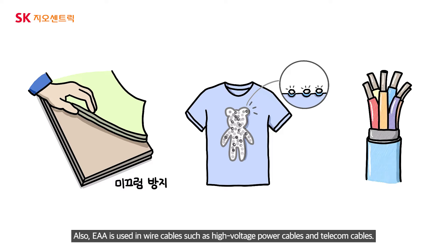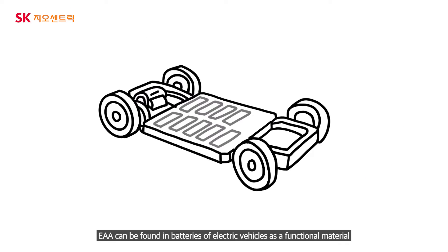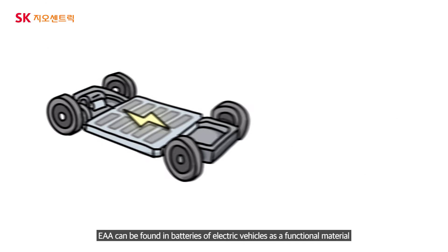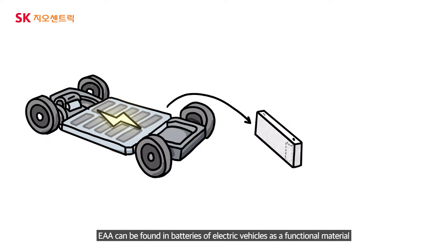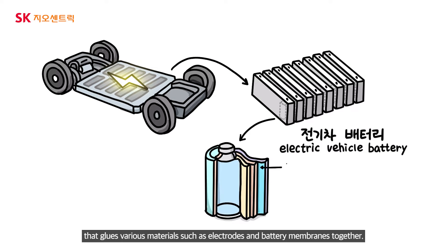EAA is used in wire cables such as high-voltage power cables and telecom cables. EAA can also be found in batteries of electric vehicles as a functional material that glues various materials such as electrodes and battery membranes together.